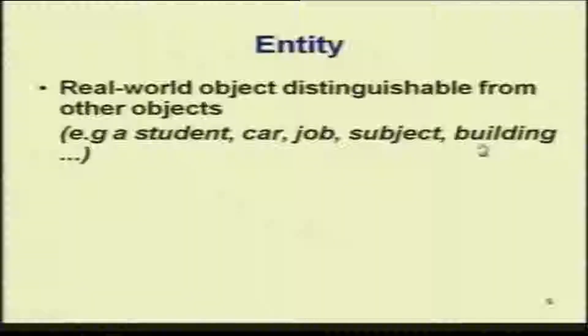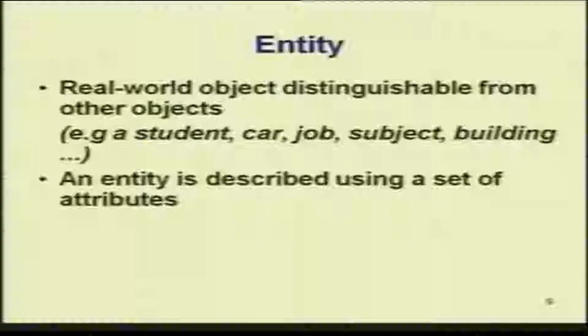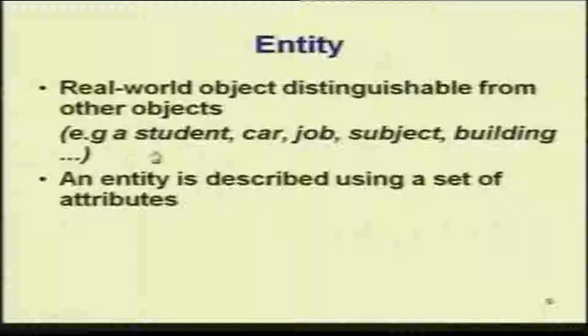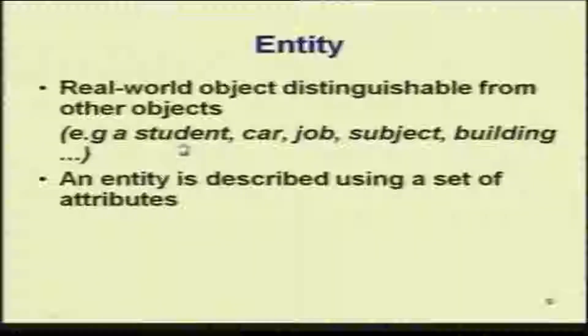You should note that some of these are physical objects like a student, car, and building, while job and subject are abstract concepts — both are called entities. They have to be distinguishable, that is all. Now, an entity is described using a set of attributes. If you want to describe a student, you should have a set of attributes associated with it.